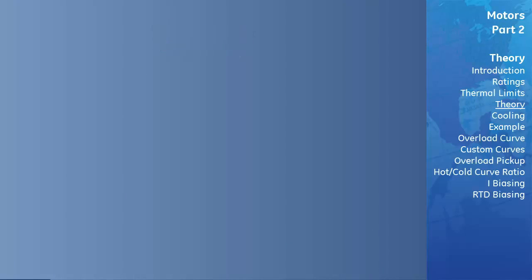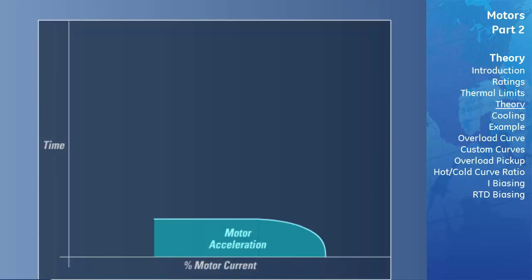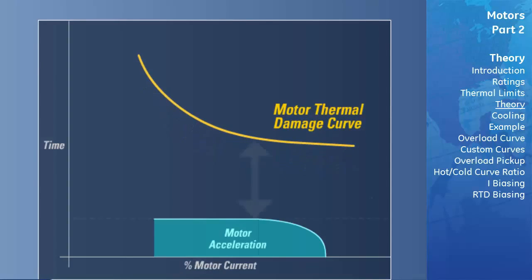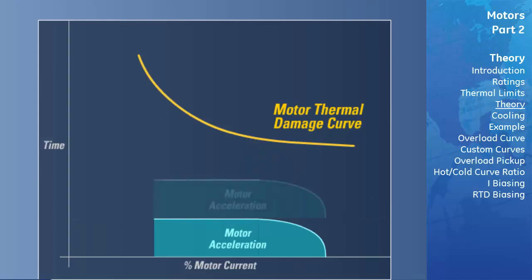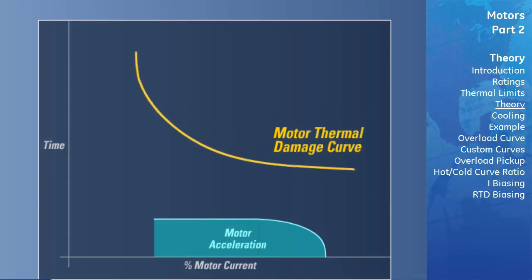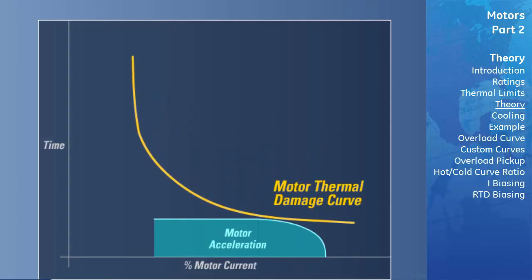This all sounds very complex, but it is actually quite easy to understand. If the motor has been designed fairly conservatively — that is, the portion of the acceleration curve under the motor thermal limits curve is less than a third to a half in terms of trip time, and the motor has been applied conservatively such that the acceleration and thermal limits curves do not cross — then thermal model settings can be set fairly easily. If the acceleration curves and thermal overload curves are very close, accuracy in the settings becomes very important to ensure reliable motor protection without nuisance tripping.